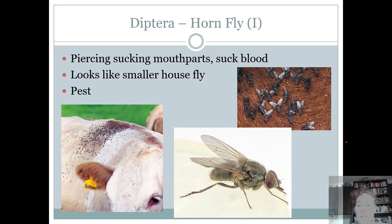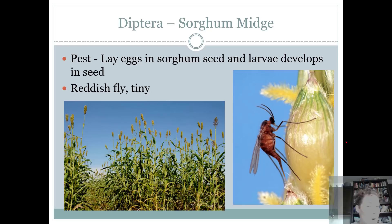Intermediates and seniors also need to know the horn fly. These guys have piercing-sucking mouthparts. They like to hang out on the head and around the horns of cattle, but also along their back. They're a major nuisance — they stress out the animal so it doesn't put on weight or do what you want. It is smaller than a house fly but looks similar. The big difference: much, much tinier, and when they land their wings are always in a V shape.